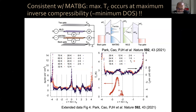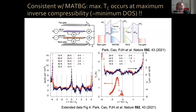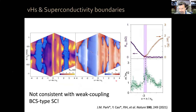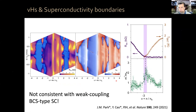This is very much not consistent with weak-coupling BCS-type superconductivity, where you'd expect maximum TC at maximum density of states. It's consistent with what we already observed in magic angle twisted bilayer graphene: the maximum TC occurs at maximum inverse compressibility, meaning at minimum density of states — the opposite of what you would expect. A question arises: why should the van Hove singularity mark a transition point? I'll address that in a few slides, when I tell you about where the superconductivity emerges.